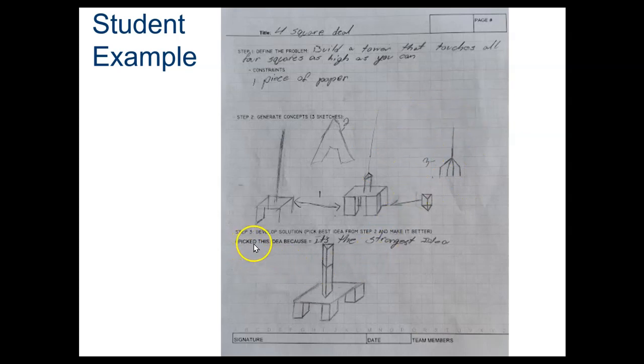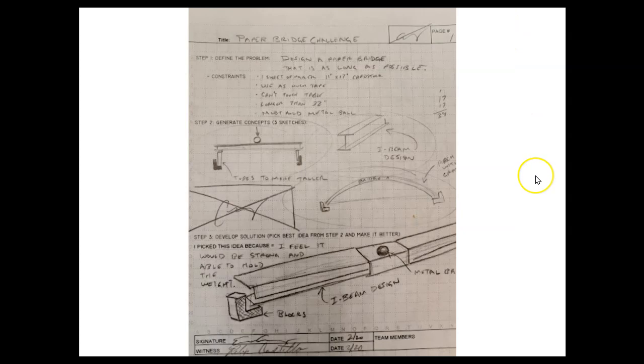It says for step three, I picked this idea because it's the strongest something. I can't read that. There's no notes next to the sketch itself explaining what these parts are. There's no signature. There's no date. There's no list of team members and there's no page number.